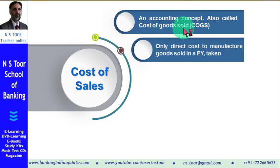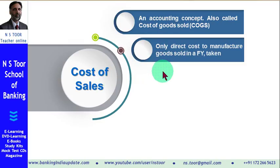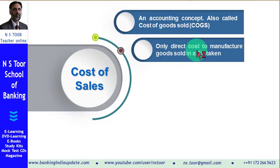When we calculate cost of sales, we take into consideration only direct cost. When manufacturing and storing goods, there are two kinds of cost. One is known as direct cost or variable cost, and the other is called indirect cost, fixed cost, or fixed overheads. Whenever we are calculating cost of sales, we take into account only direct cost or variable cost.